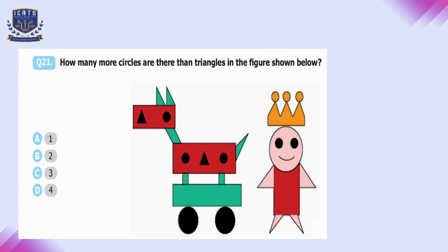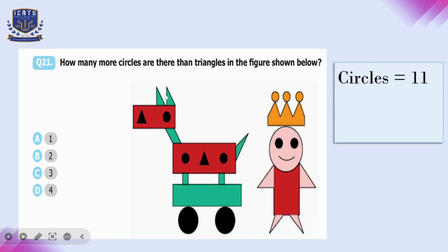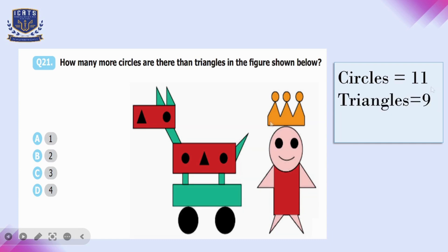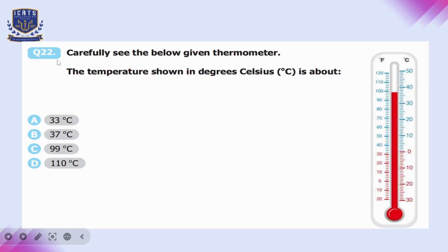Question number twenty-one: how many more circles are there than triangles in the figure? Counting the circles gives 11. Counting the triangles — each with three sides — gives 9. Subtracting 9 from 11 gives 2, so there are two more circles than triangles.